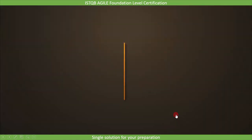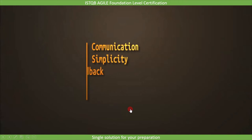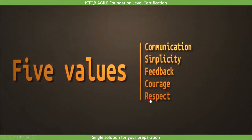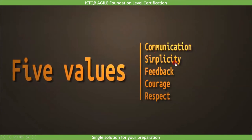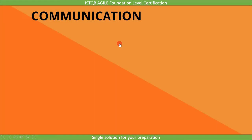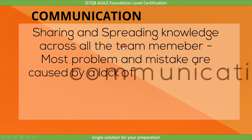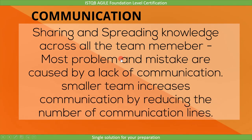Extreme Programming embraces five values to guide development: communication, simplicity, feedback, courage, and respect. Communication means sharing and spreading knowledge across all team members. Most problems and mistakes are caused by a lack of communication. Smaller teams increase communication by reducing the number of communication lines.